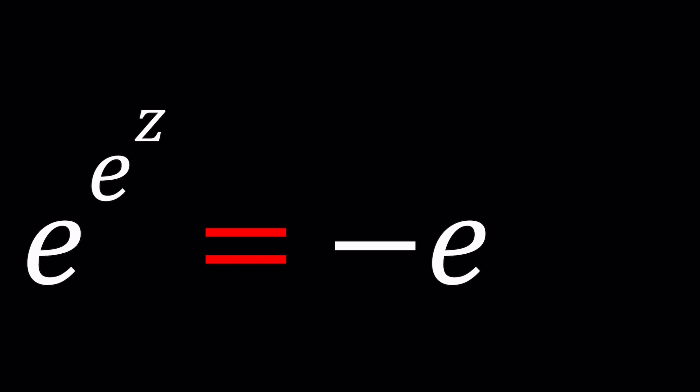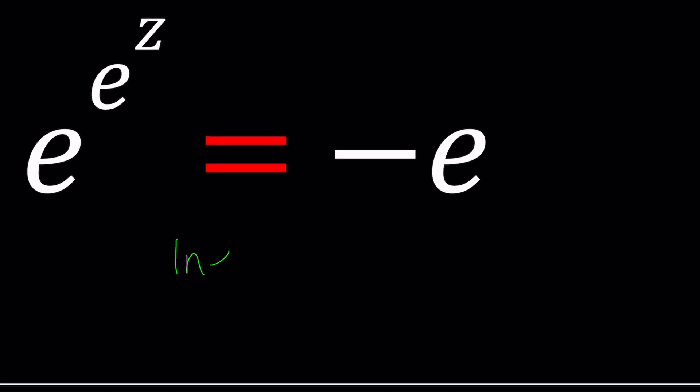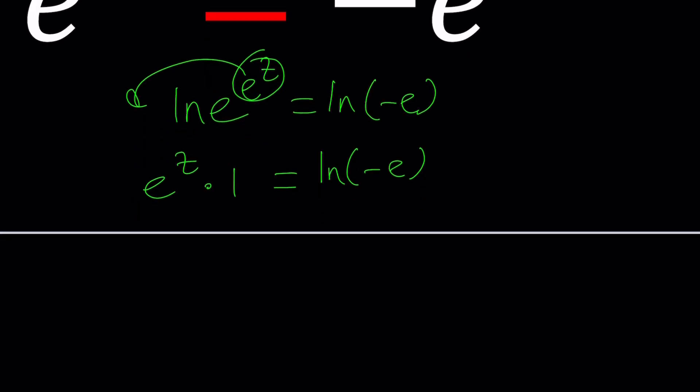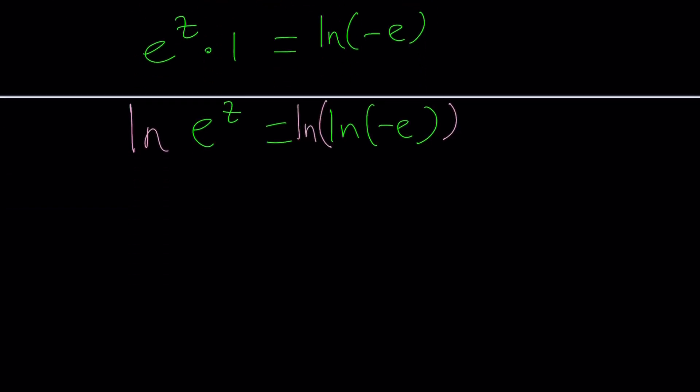So how do we solve for z? One of the things that people usually do when they see problems like this is why don't we ln both sides because ln is going to bring down the exponent. So you're going to get e to the z times ln e which is one, so equals ln of negative e. Then you have to ln one more time because e to the z equals ln negative e requires that you do ln one more time to get the z. So that's kind of like ln of ln of something. This is the cheap solution but if you're here for the good nice solution you're going to wait till the end.